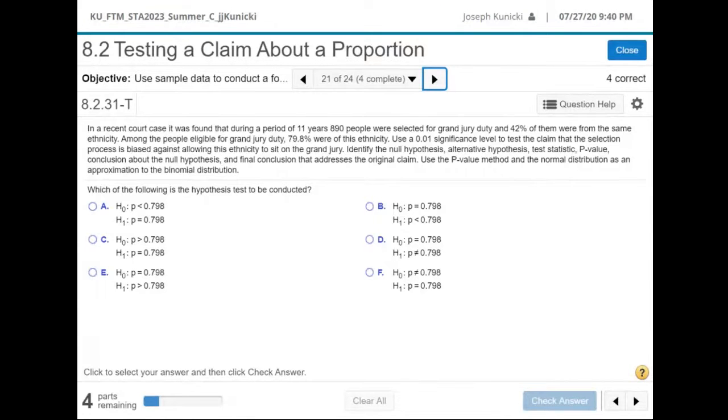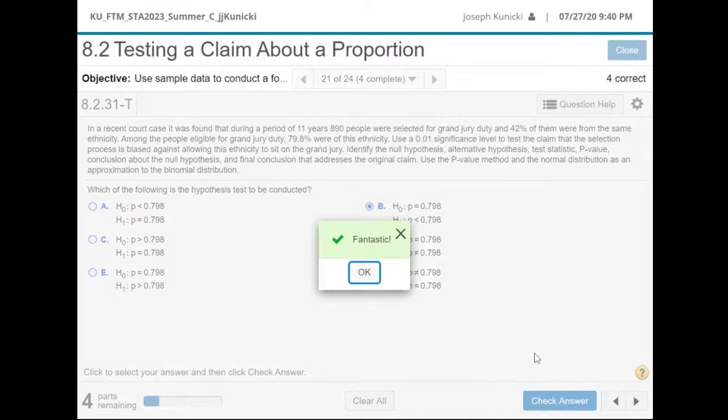So you can see all the examples are using 0.798. If it's biased against allowing this ethnicity, then it would have to be less than. So it has to be B, right? If it's biased then it would have to be less than that. Okay, so the claim has to go on the alternative because it says less than. So that's the only one that fits the bill really.